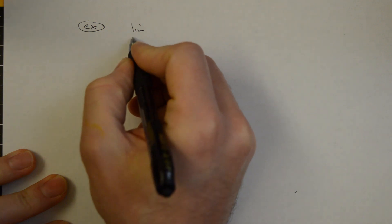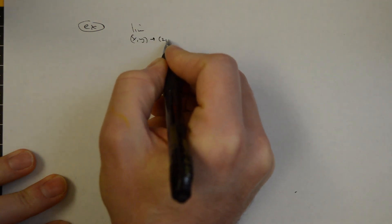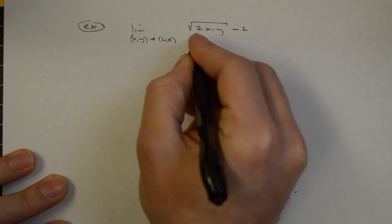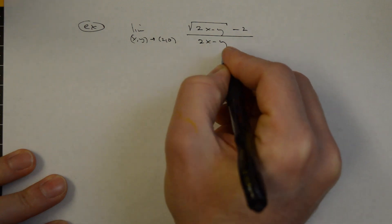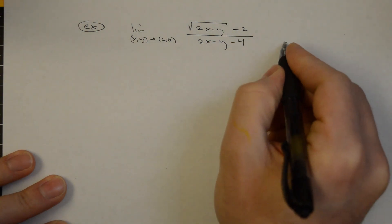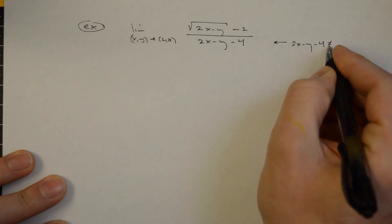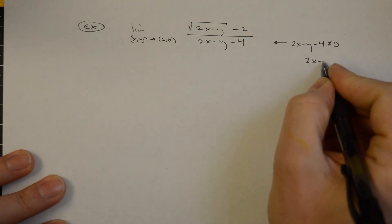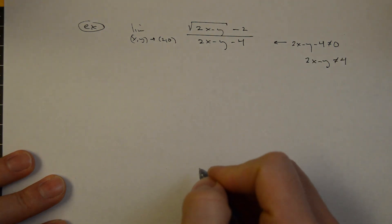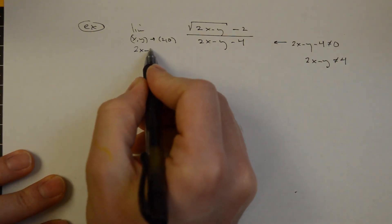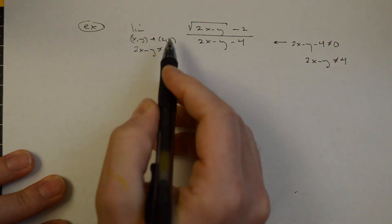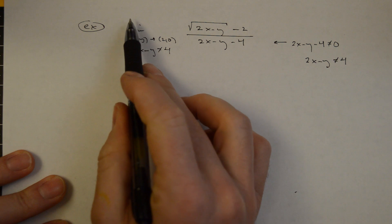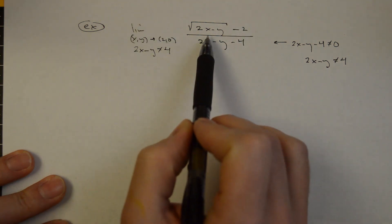Here is another example: the limit as (x,y) approaches (2,0) of (√(2x−y) − 2) / (2x−y−4). We require that 2x−y−4 does not equal 0 for this quotient to be defined, so 2x−y is not allowed to equal 4. This condition is typically added under the limit, saying we admit all paths to the limit point except the path where the denominator is undefined.